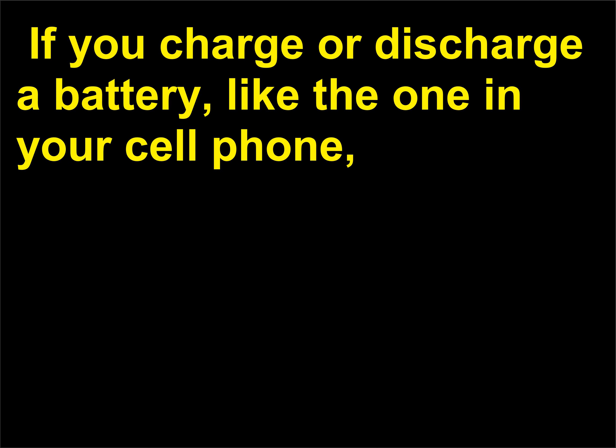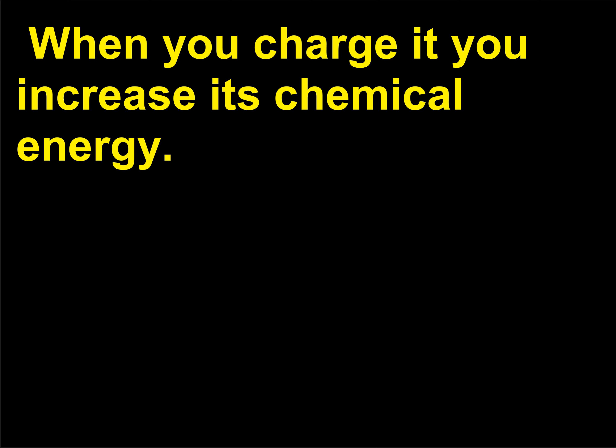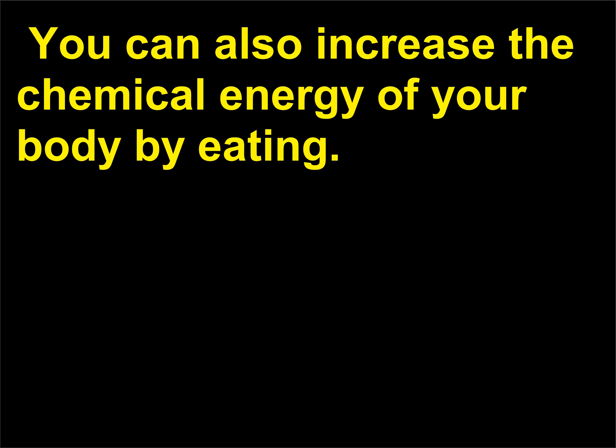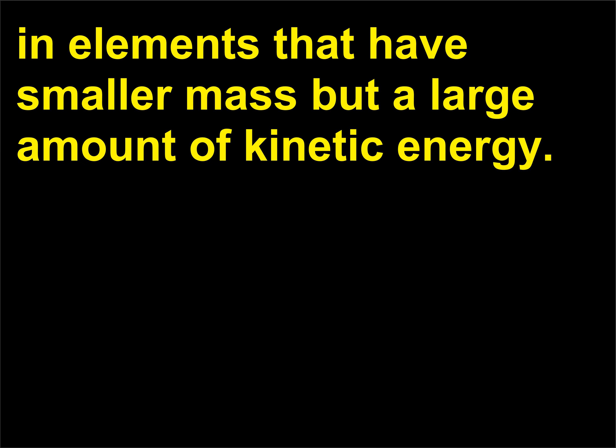If you charge or discharge a battery, like the one in your cell phone, you change the chemical composition of the battery materials. When you charge it you increase its chemical energy. You can also increase the chemical energy of your body by eating. Even mass has stored energy — splitting the nucleus of a uranium atom results in elements that have smaller mass but a large amount of kinetic energy.